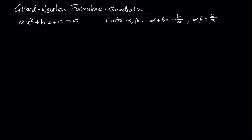We're going to use that to derive the Girard-Newton formulae. For the Girard-Newton formulae, what we're really interested in is power sums of the roots. We let Pn be the nth power sum, defined as alpha to the power of n plus beta to the power of n. That's why it's called a power sum — it's a sum of powers of the roots.